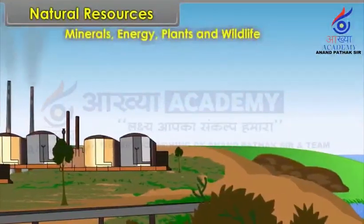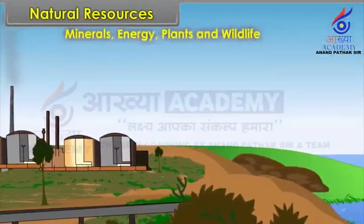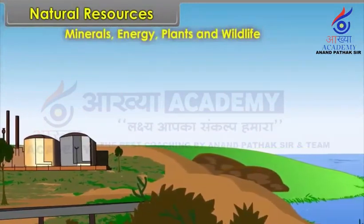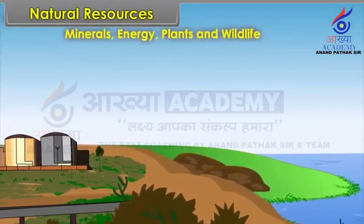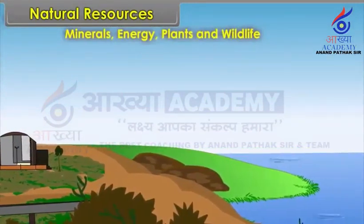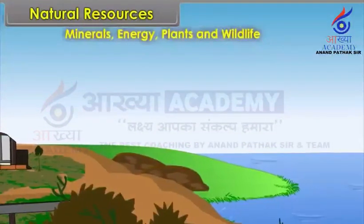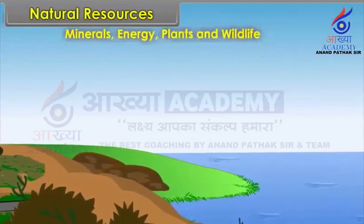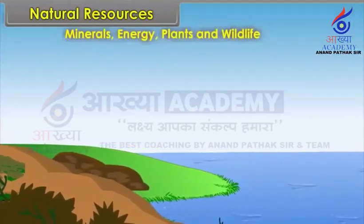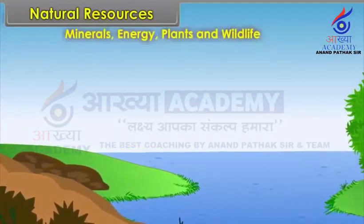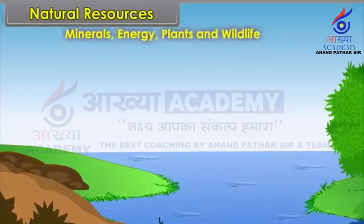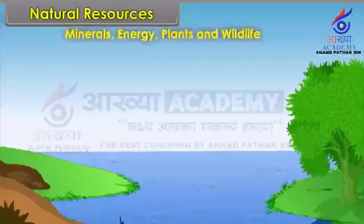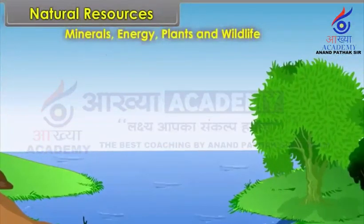The natural growth of all types of plant life is termed as natural vegetation. The vegetation of different parts of the world is affected by the amount of sunlight and the amount of rainfall.